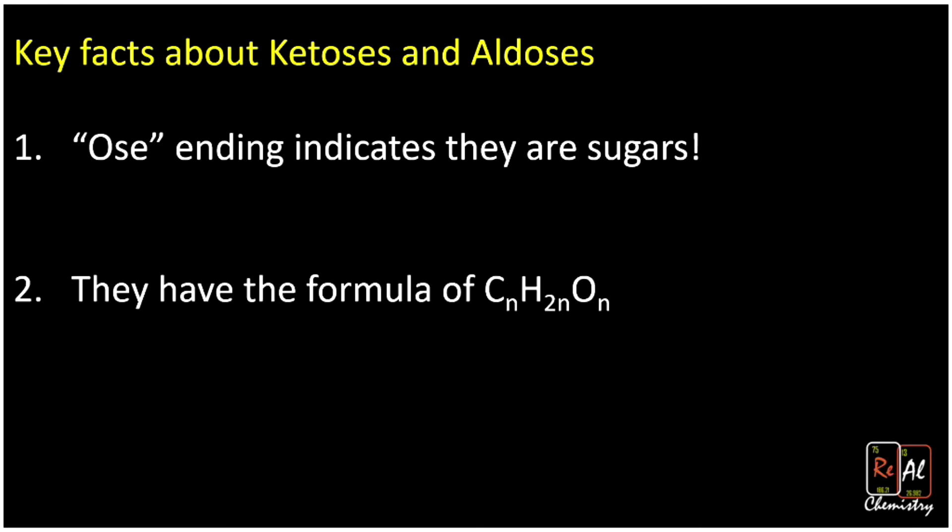Sugars will always have the formula CnH2nOn. That means that the number of carbons and oxygens will match, and that we'll have twice as many hydrogens as we do carbons or oxygens. So for example, glucose, probably the most important sugar since it's your blood sugar, has the formula C6H12O6. Notice, in this case, that the number of carbons matches the number of oxygens, so that's good. And then the hydrogens is twice as many. So that matches that general formula. So that's a good formula for a sugar.